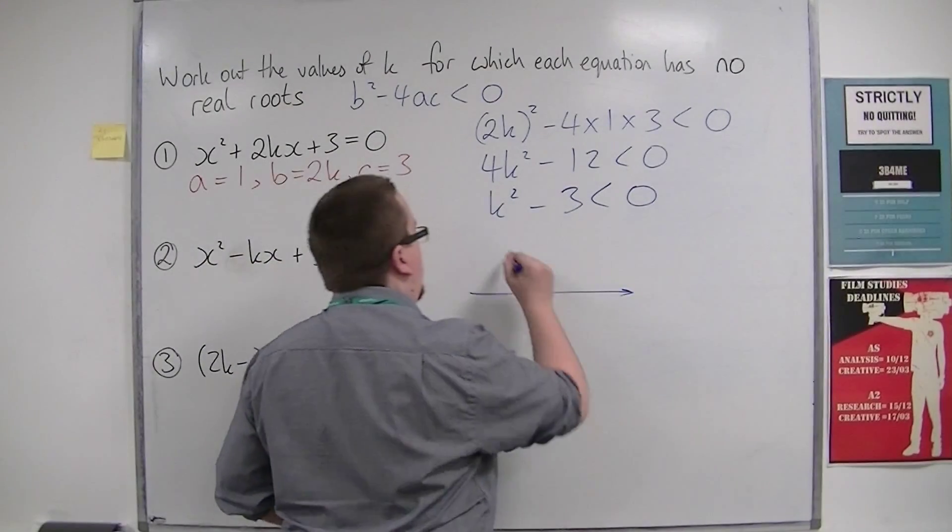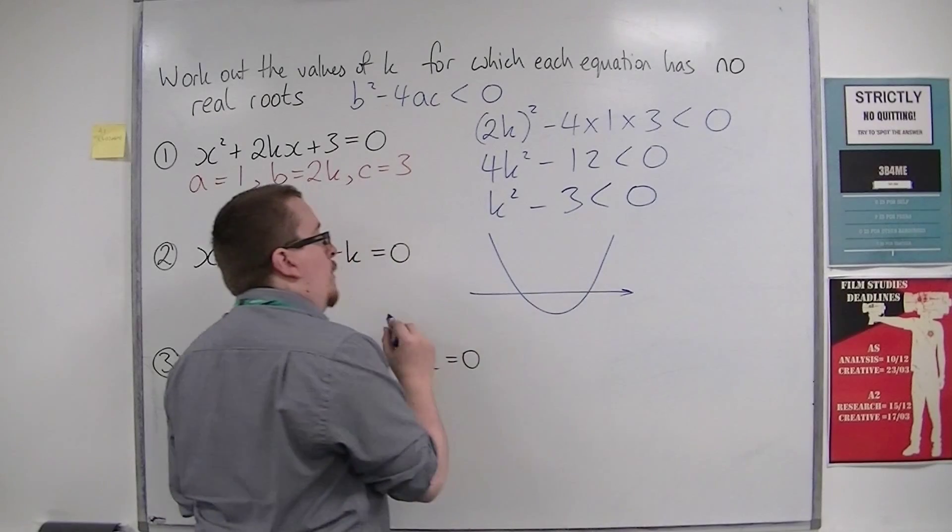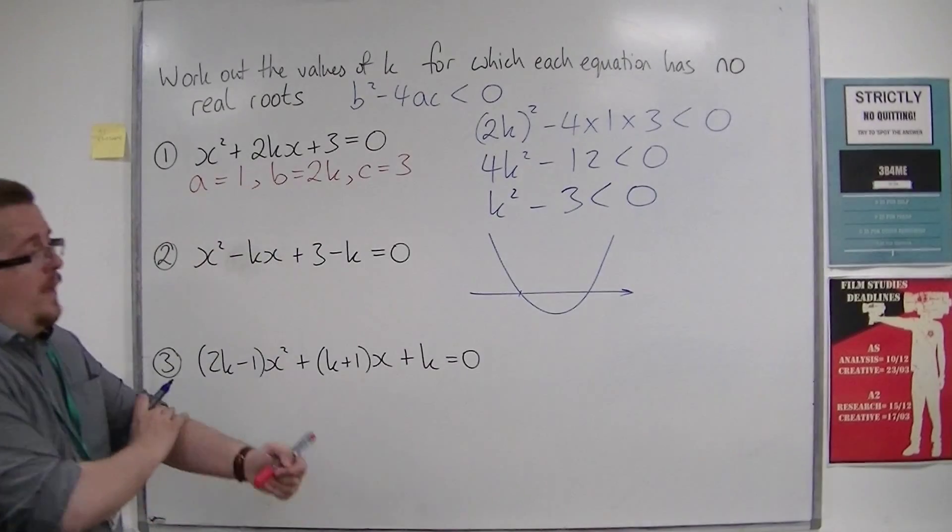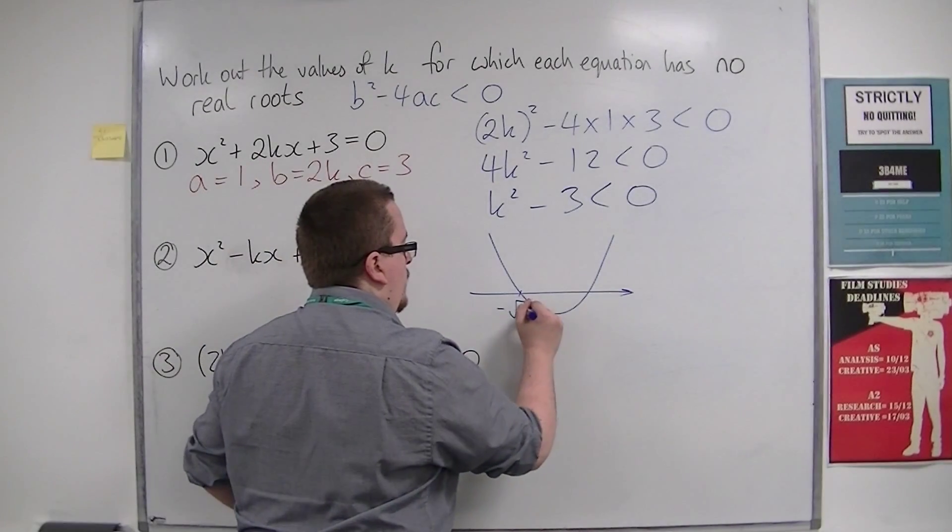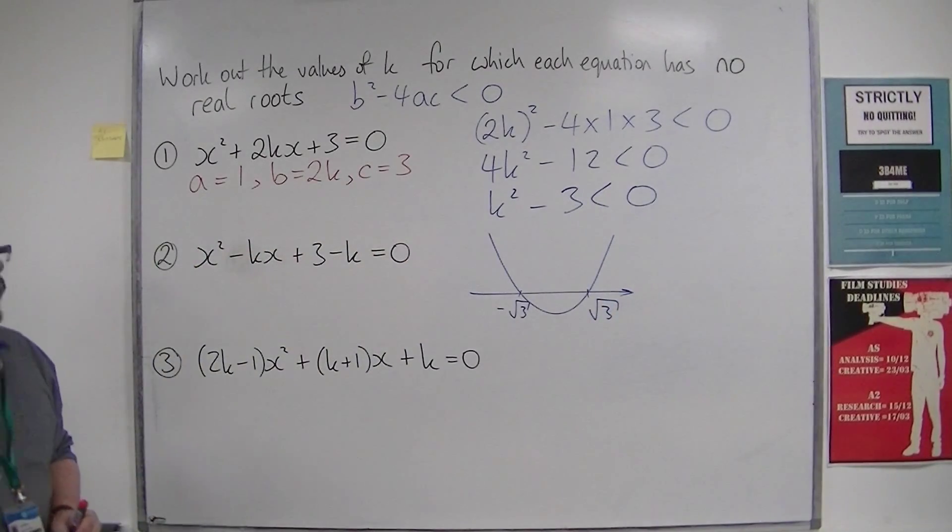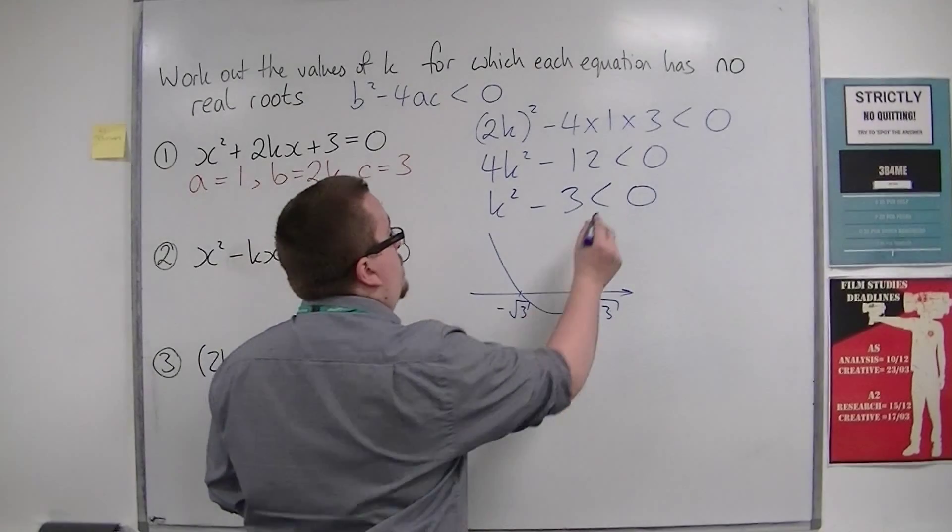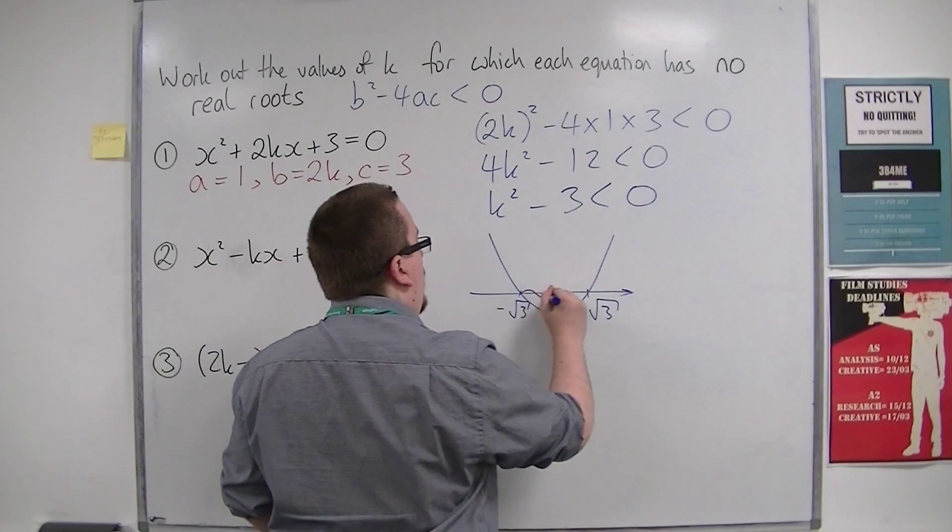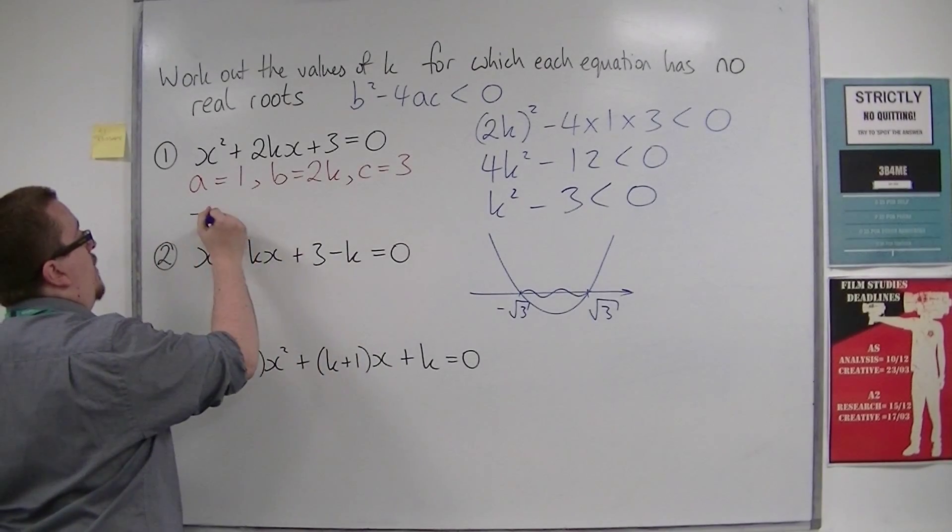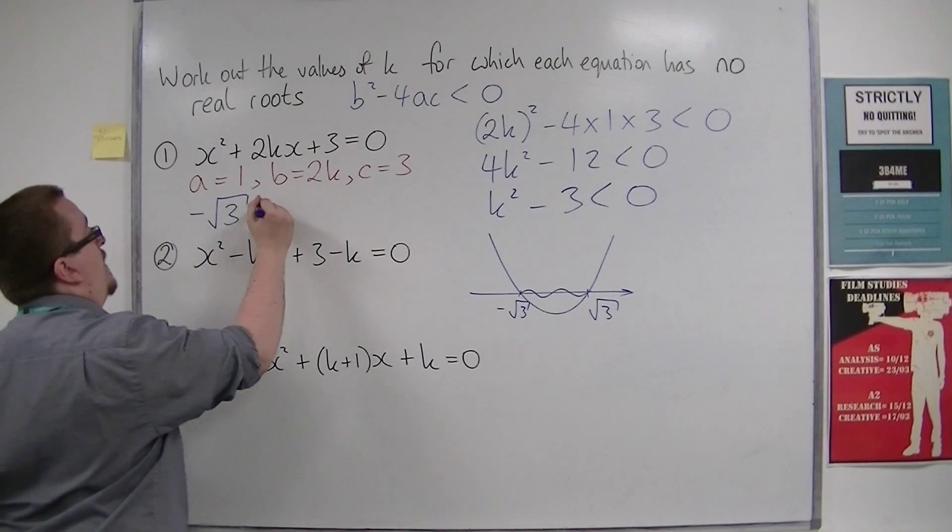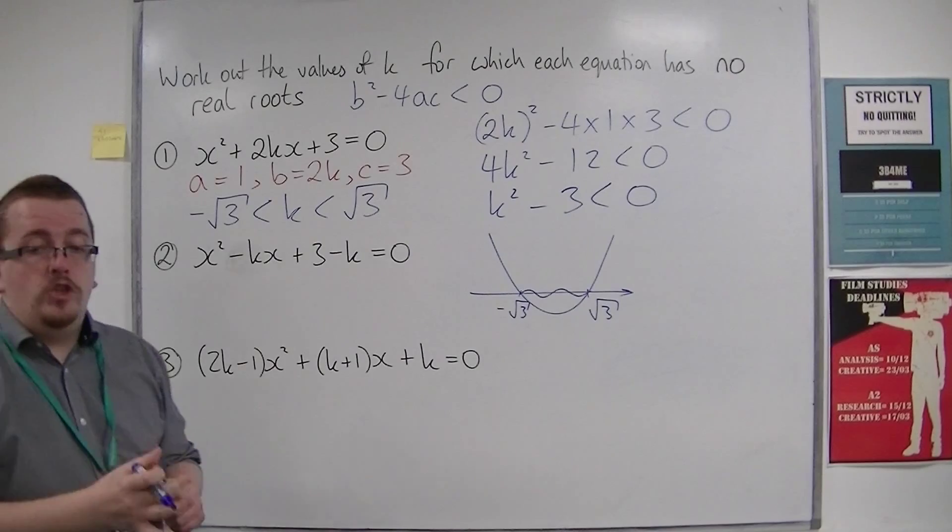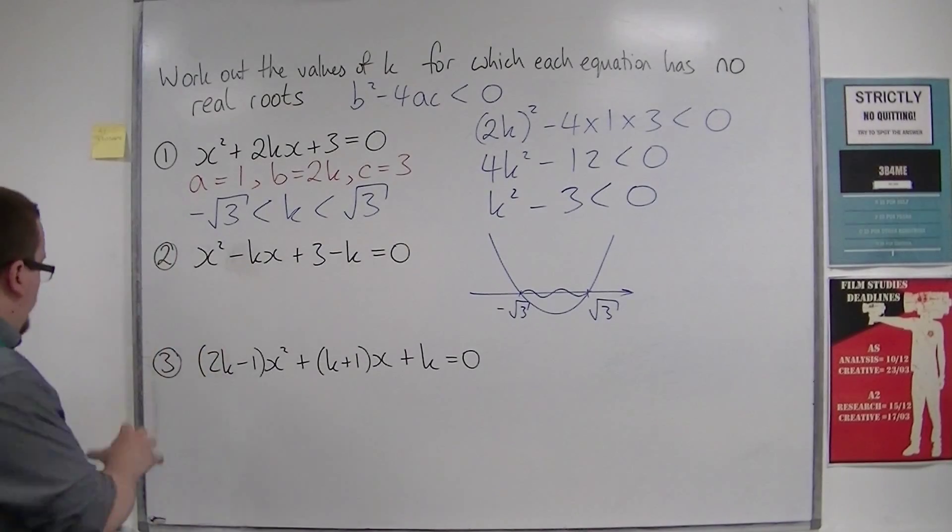That is a quadratic. It will be crossing the k-axis at -√3 and +√3. Where is the parabola below the k-axis? It's below between those two values. So the solution to the problem is -√3 < k < √3. One region, one inequality.